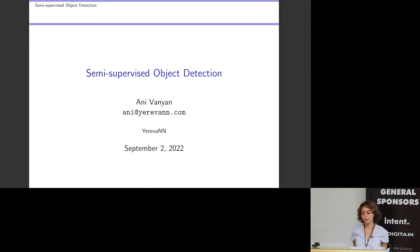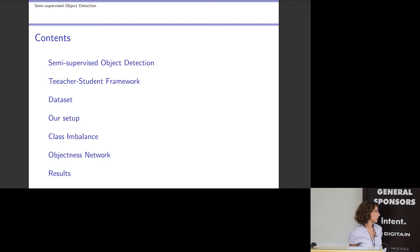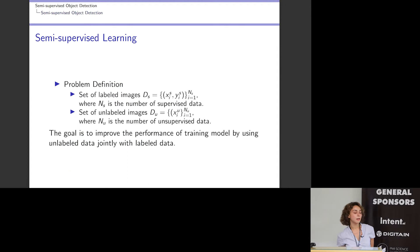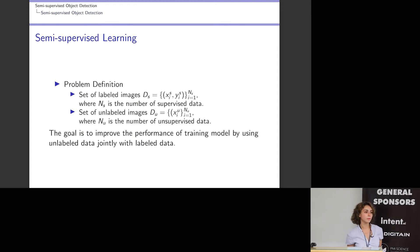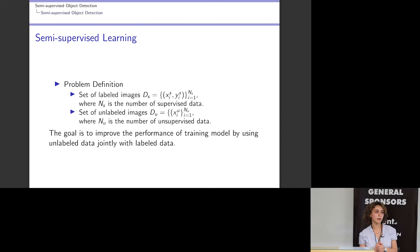Hi everyone. This session is about semi-supervised object detection. In this setup, we have a small amount of labeled data and a large amount of unlabeled data. The goal of semi-supervised learning is to improve model performance by using this unlabeled data jointly with labeled data.